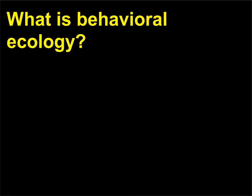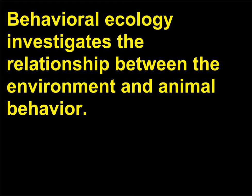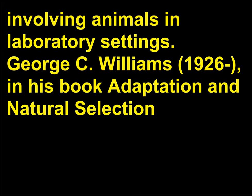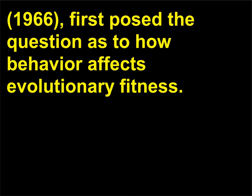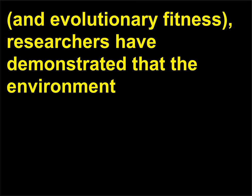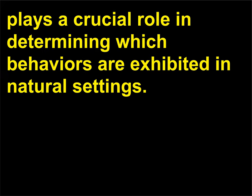What is behavioral ecology? Behavioral ecology investigates the relationship between the environment and animal behavior. It emphasizes the evolutionary roots of the behavior, in contrast to the classical studies involving animals in laboratory settings. George C. Williams, 1926, in his book Adaptation and Natural Selection, 1966, first posed the question as to how behavior affects evolutionary fitness. By showing that behavior is responsive to the environmental forces that drive natural selection and evolutionary fitness, researchers have demonstrated that the environment plays a crucial role in determining which behaviors are exhibited in natural settings.